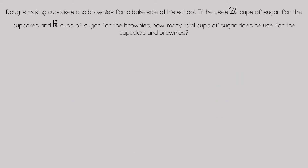Doug is making cupcakes and brownies for a bake sale at his school. If he uses two and seven-eighths cups of sugar for the cupcakes and one and seven-eighths cups of sugar for the brownies, how many total cups of sugar does he use?